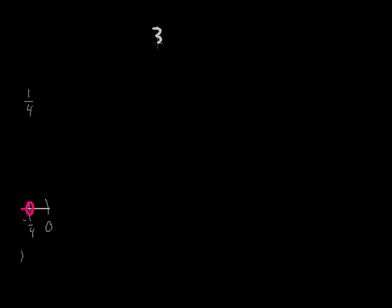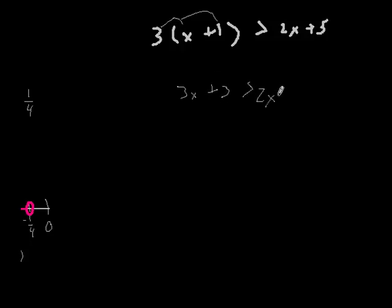Let's take a look at one more problem here. We'll have 3 times x plus 1 is greater than 2x plus 5. First thing we do is reduce the problem. So I have 3x plus 3 is greater than 2x plus 5. First thing I'll do is subtract 3 on both sides. And now I have 3x is greater than 2x plus 2. And again, I'll subtract 2x this time from both sides. And I'm left with x is greater than 2.